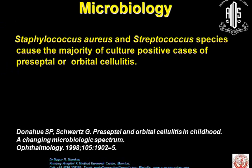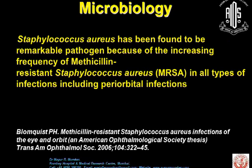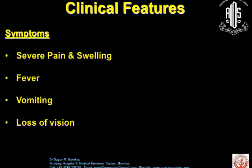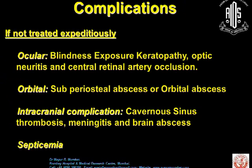We need to consider microbiology. Literature shows that Staphylococcus epidermidis and Staphylococcus aureus cause the majority of culture-positive cases of preseptal or orbital cellulitis in children. Staphylococcus aureus is remarkable because of the increasing frequency of MRSA in all types of infections, including upper respiratory infections. Signs include marked swelling of the lids, proptosis, restriction of ocular movements, and examination of the fundus may show papilloedema. Symptoms could include pain, swelling, fever, and loss of vision.